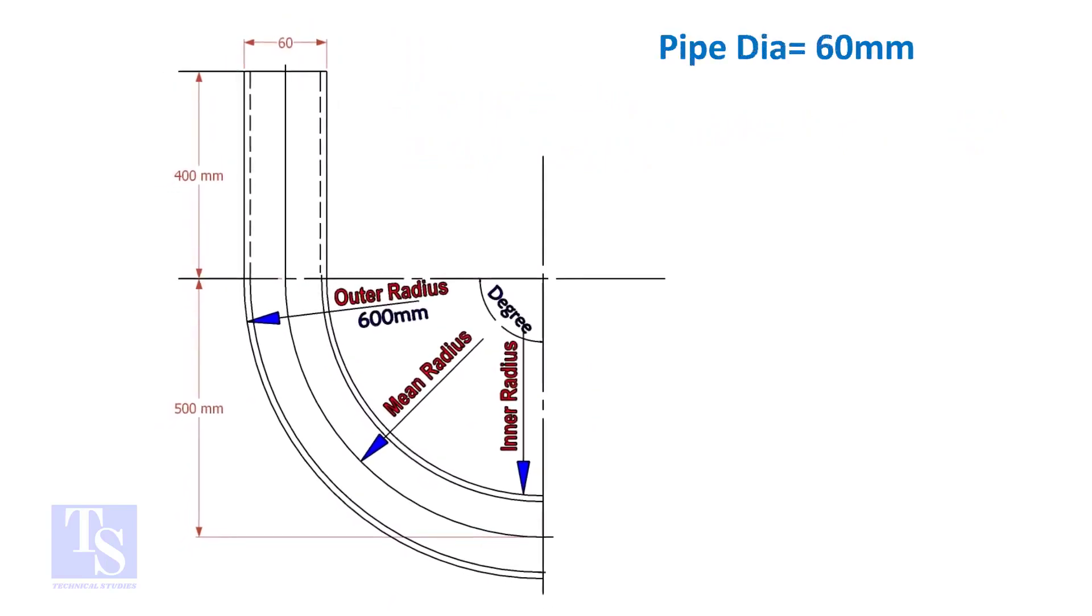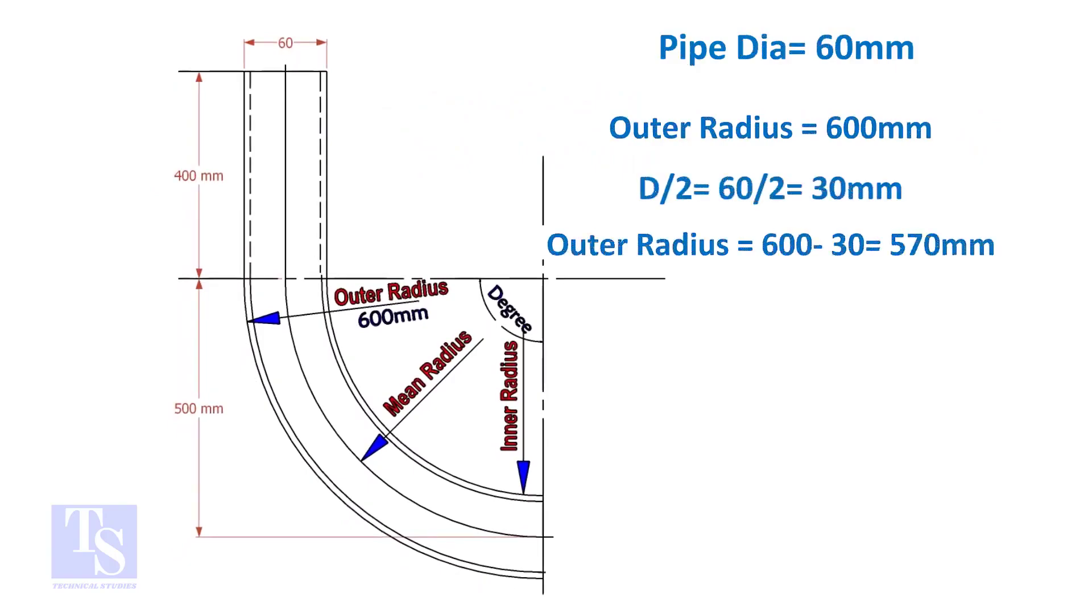Assume the diameter of the bend is 60 mm, and the outer radius is 600 mm, then the mean radius is 600 minus half the diameter of the pipe, which equals 570 mm.